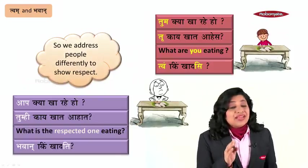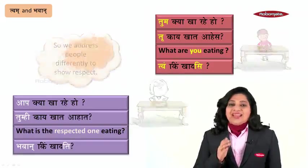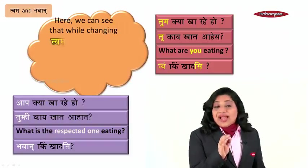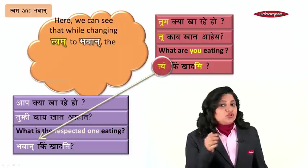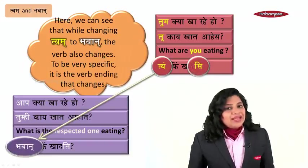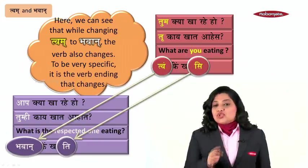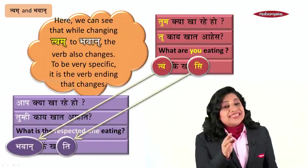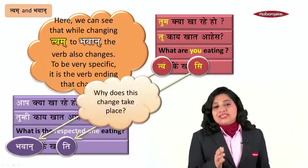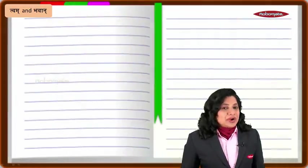I am sure you have understood that we address people differently to show respect. Notice that while changing twam to bhavan, there is a change in the verb as well. To be specific, it is the verb ending that changes — twam changes to bhavan, and 'si' changes to 'ti'. Let us understand how this change takes place.